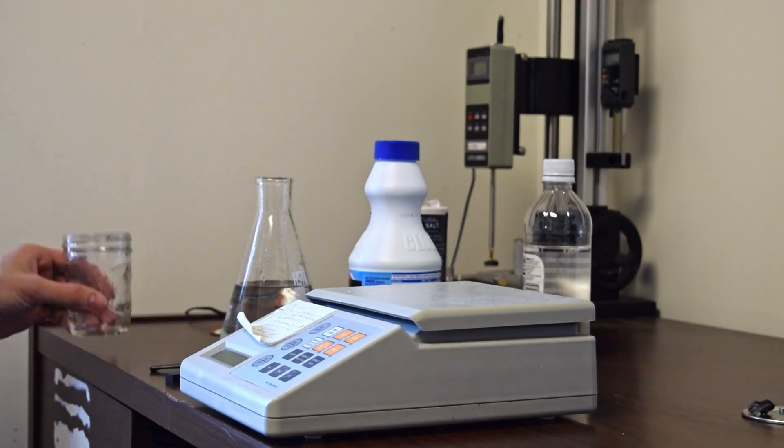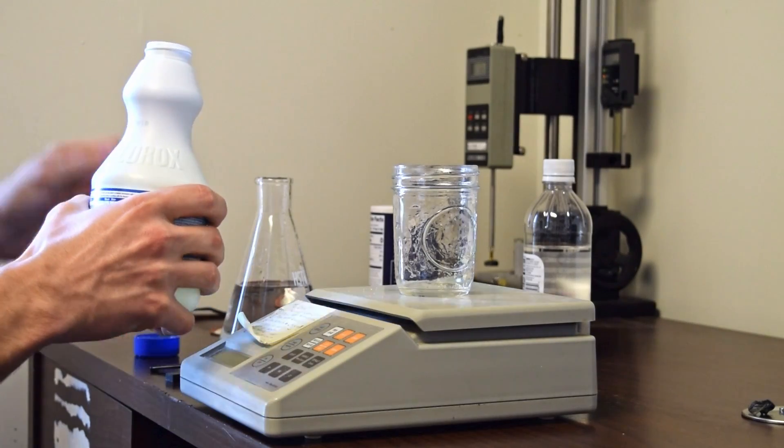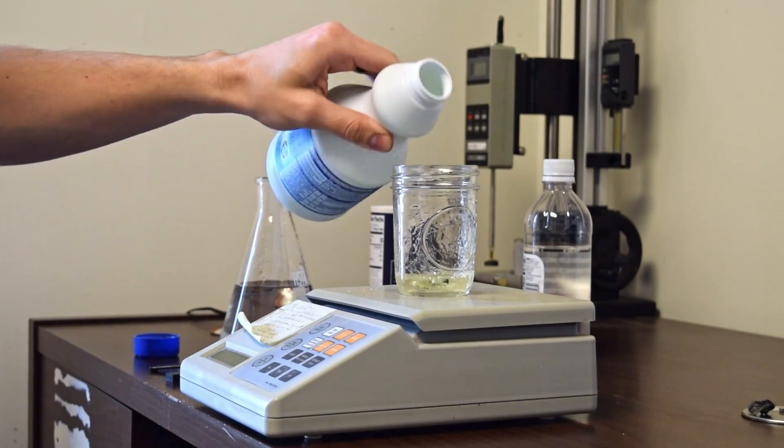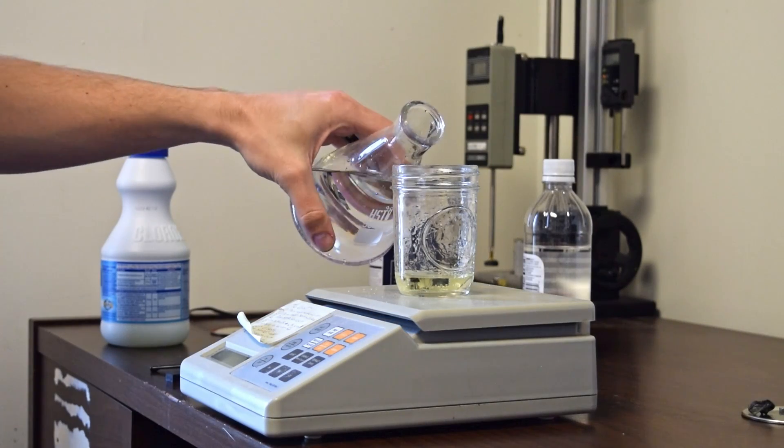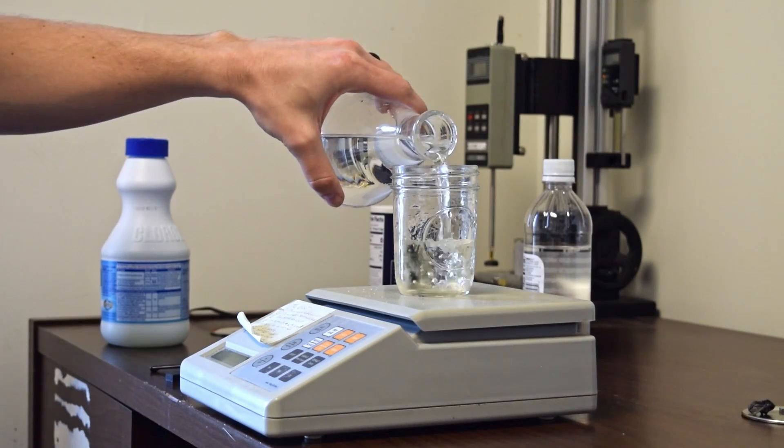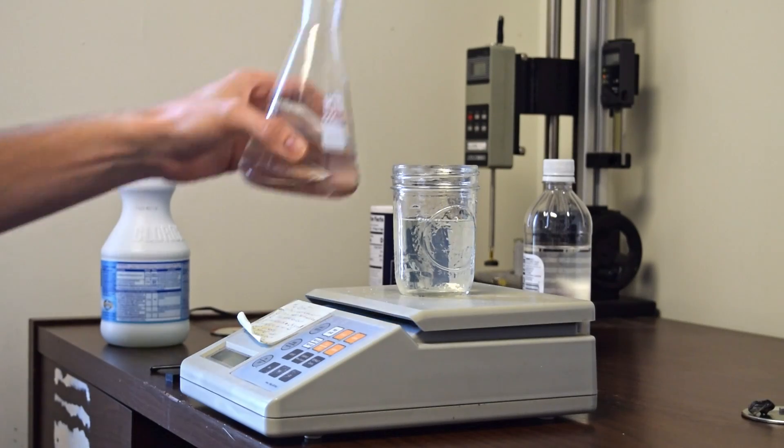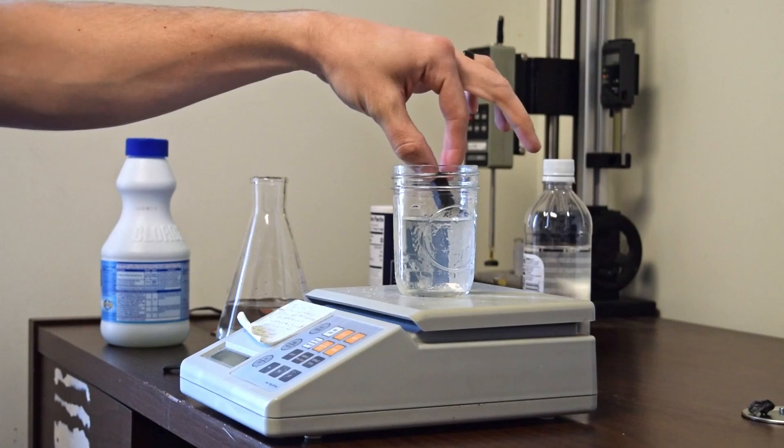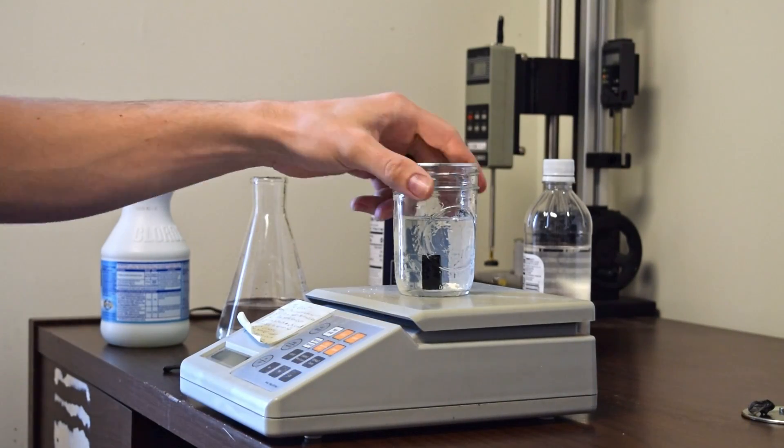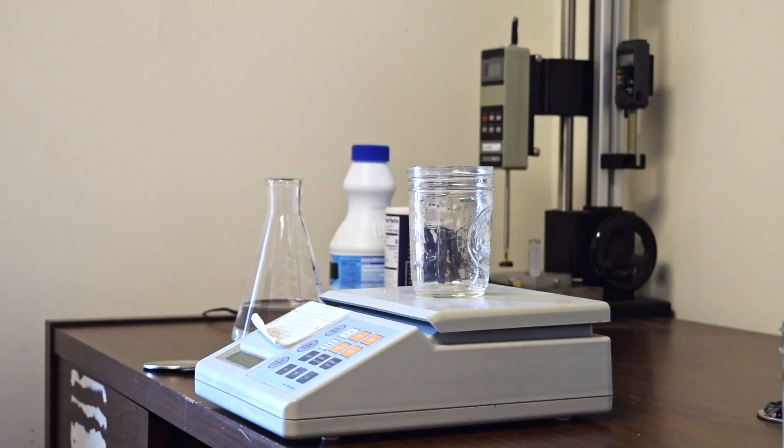Next, we made up a 1 to 10 bleach cleaning solution, which is a common ratio for household and commercial cleaning. And last, we'll test a 1 to 1 vinegar solution.